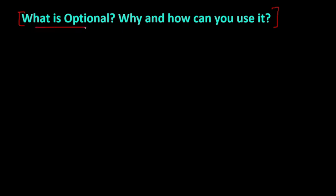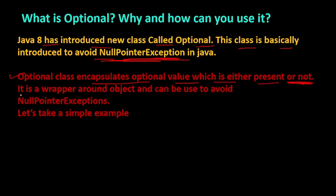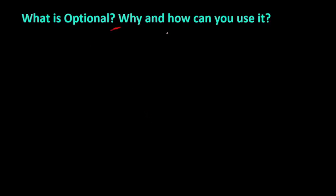What is the Optional class and why do we use it? Java 8 introduced the Optional class basically to avoid NullPointerExceptions. An Optional encapsulates a value that may or may not be present — that's why we use isPresent() to check it. It is a wrapper around an object and can be used to safely avoid null pointer exceptions, as we demonstrated in the coding questions above.